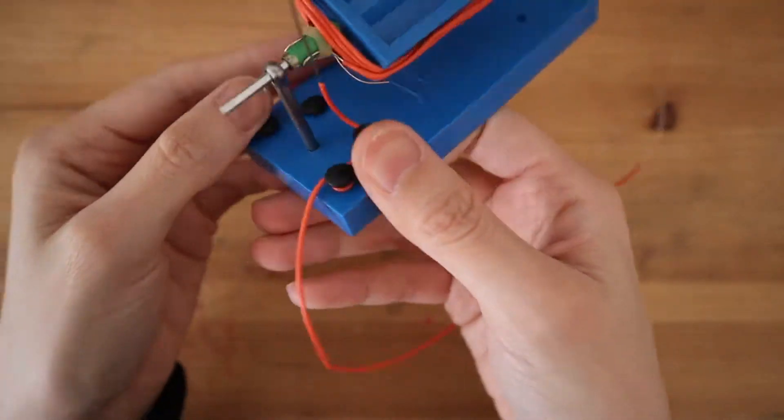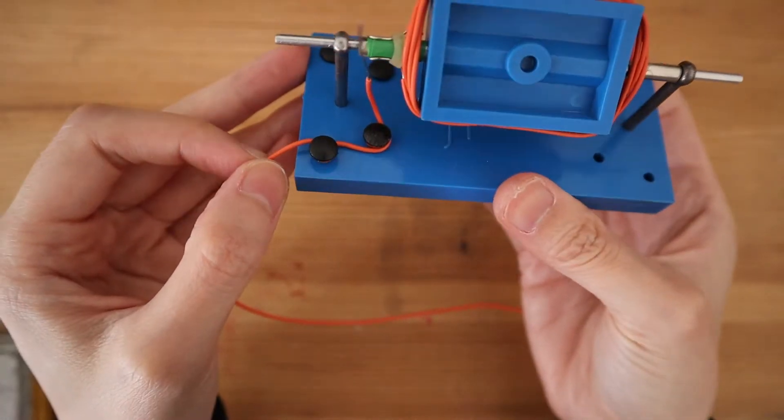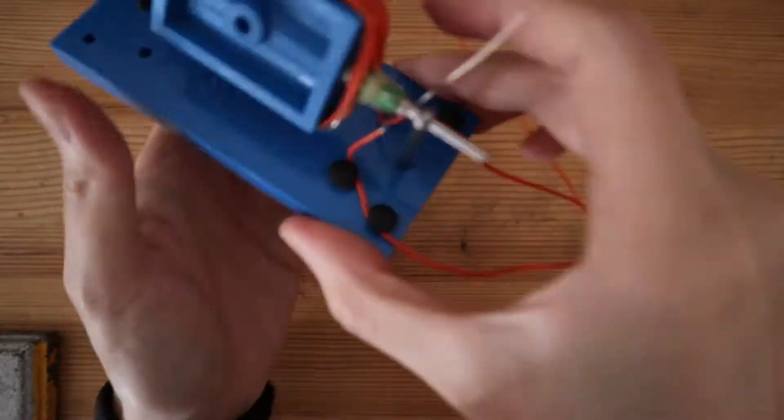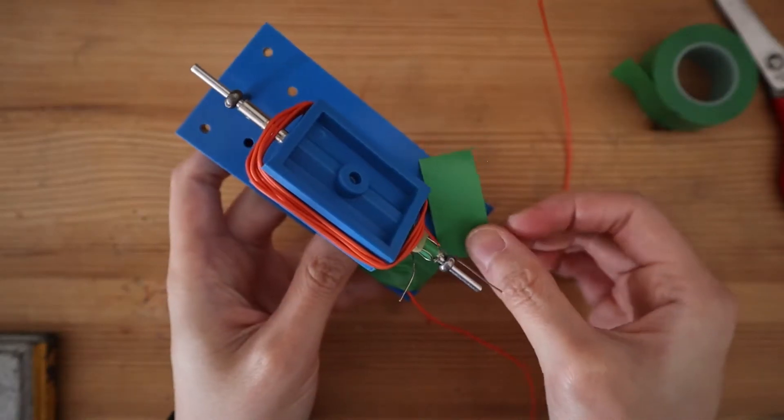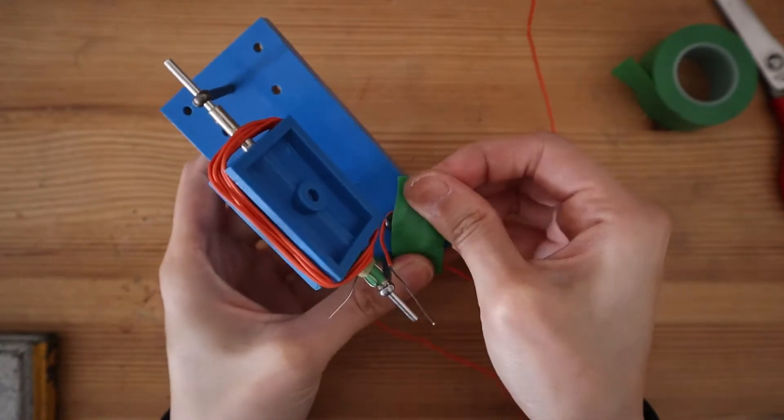I find it much easier if you make a loop with the wire first before clipping it beneath the rivet. Once they are both in, you can put electrical tape over them to prevent the rivets from popping out.